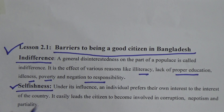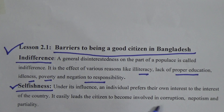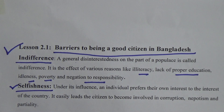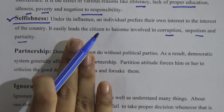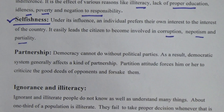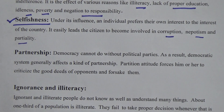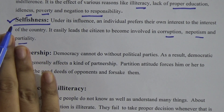The second barrier is selfishness. Under its influence, an individual prefers their own interest to the interest of the country. It easily leads the citizen to become involved in corruption, nepotism, and partiality. Selfishness can lead us to corruption, nepotism, and partiality. Under the influence of selfishness, an individual prefers their own interest without taking care of others' interests. This is called selfishness and it is a barrier to being a good citizen.